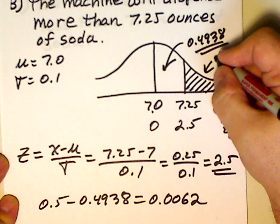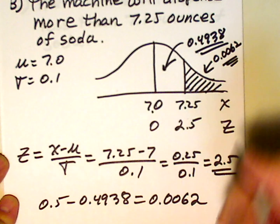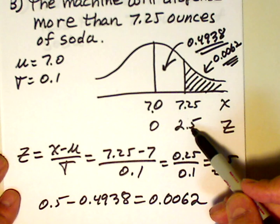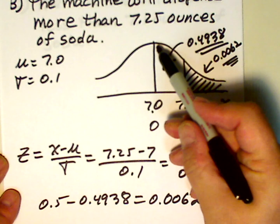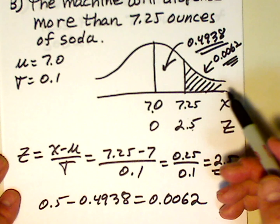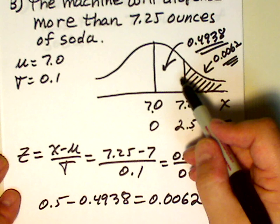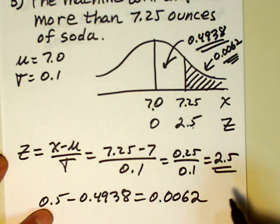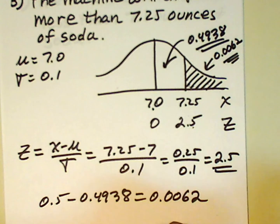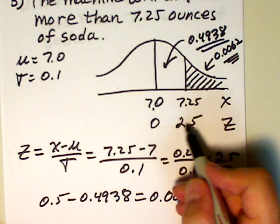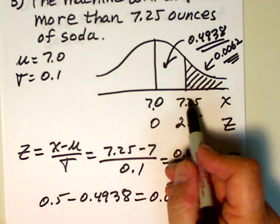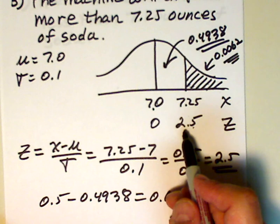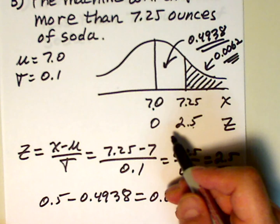That area is 0.0062. We calculated the Z value associated with 7.25, which is 2.5. We know the total area to the right of the mean is 0.5. We looked up the area from 7 to 7.25 and got 0.4938. We took 0.5 minus 0.4938 and got 0.0062. By the way, these Z values are in units of standard deviations — the original units here are ounces — but standard normal distribution units are always standard deviations. So 7.25 is 2.5 standard deviations from the mean.